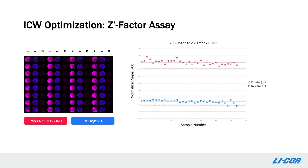In the ERK phosphorylation story, a Z-factor was calculated by comparing the ERK signal detected in wild-type and ERK-1 knockout HeLa cells. The calculated Z-factor was 0.735, which indicates that ERK-1 antibody detection is optimized. It is worth noting that a second Z-factor was calculated for detection of phosphorylated ERK, but in the interest of time, I will not discuss those results today.